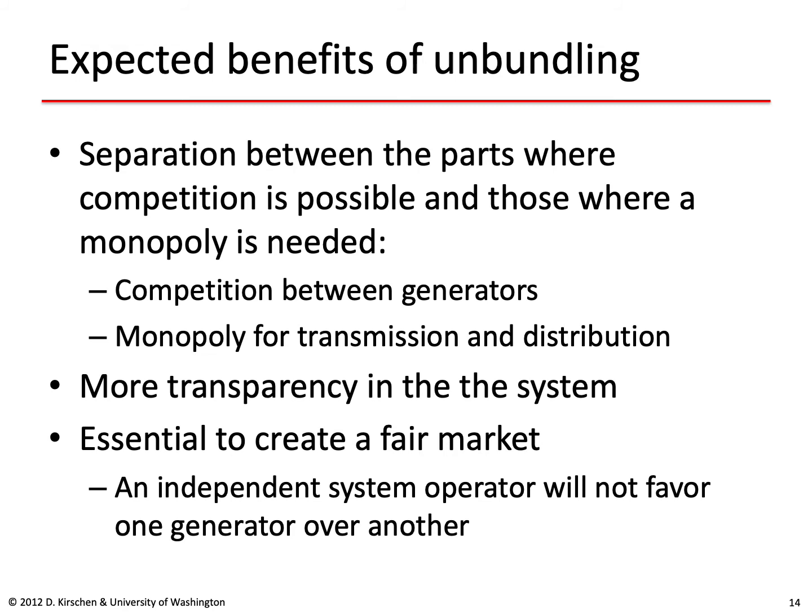There are also advantages to unbundling the various parts of the industry. You want to separate the parts where competition is possible from the parts where it's important to keep a monopoly. We can have competition between generating companies, but we should keep a monopoly in transmission and distribution because we don't want multiple sets of wires. Unbundling creates more transparency — it becomes clearer where costs lie for generation versus transmission and distribution. It is also essential for creating a fair market, since an independent system operator will not favor one generator over another.